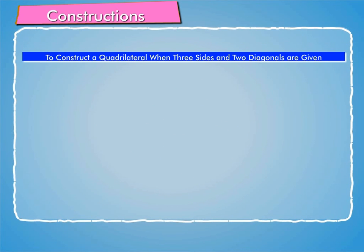After this, now let us learn to construct a quadrilateral when three sides and two diagonals are given.